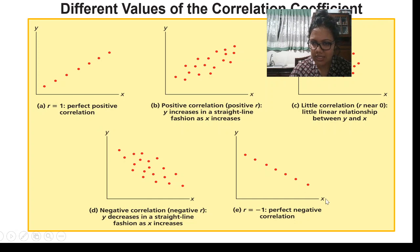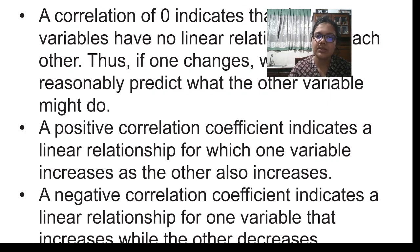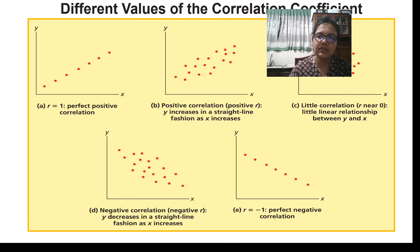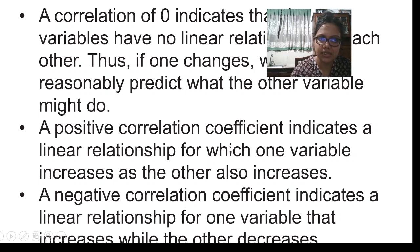In scatter diagram E, you can see there is a perfectly negative correlation. There is a clear linear relationship from plot to plot, and r equals minus one. Based on the values you are getting for the correlation coefficient, you can determine what kind of relationship exists between the two variables.